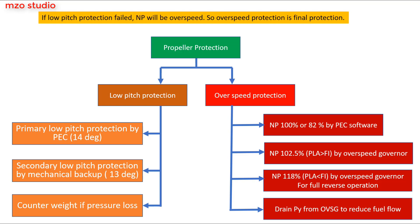If the low pitch protection fails, the propeller speed will go into overspeed. Therefore, overspeed protection is the final protection.